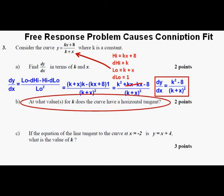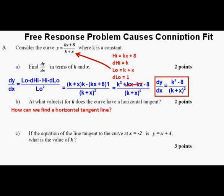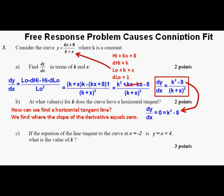Now on to Part B: At what value or values for k does the curve have a horizontal tangent? We find the horizontal tangent where the slope of the function is 0, and this can be found where the derivative of the function equals 0. So we have dy/dx equals 0, which means k squared minus 8 equals 0. We just have to set the numerator, k squared minus 8, equal to 0.